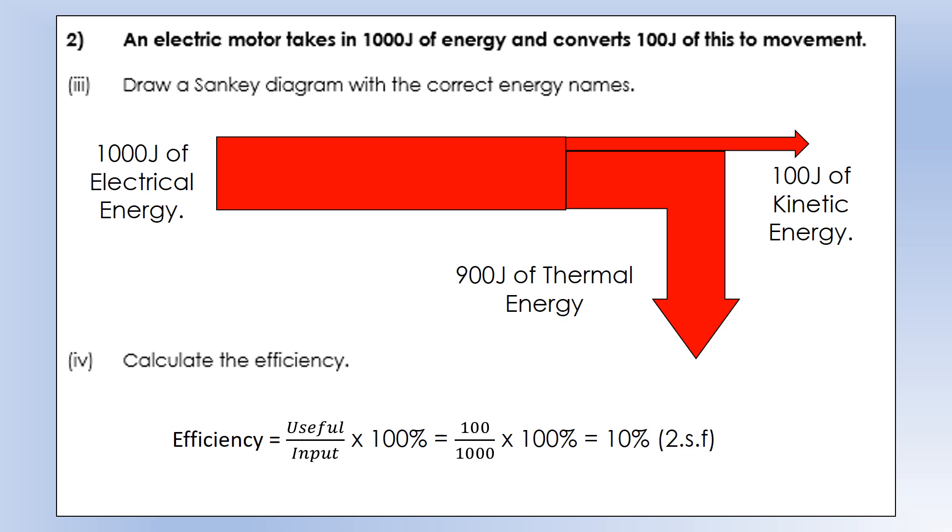Our next scenario, we've got an electric motor takes in a thousand joules of energy and converts it into 100 joules of movement. An electric motor takes electrical energy and turns it into kinetic energy. That's what movement is.